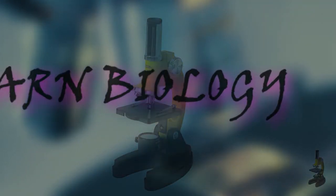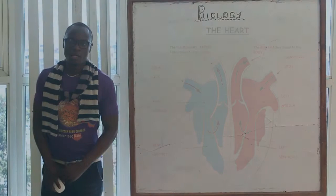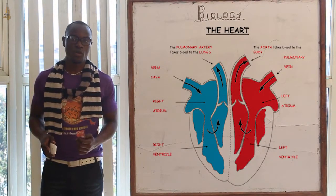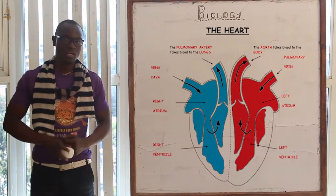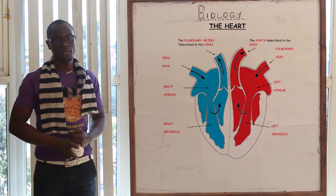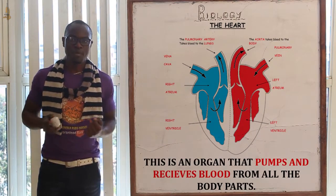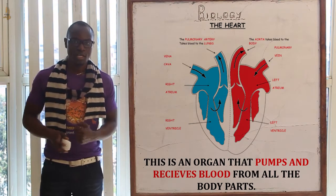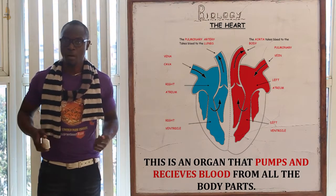Welcome to this Biology class where we are going to discuss about the heart. What is the heart? As you can see on the diagram, this is an organ that pumps blood to all parts of the body. That is the heart — its function is to pump blood.